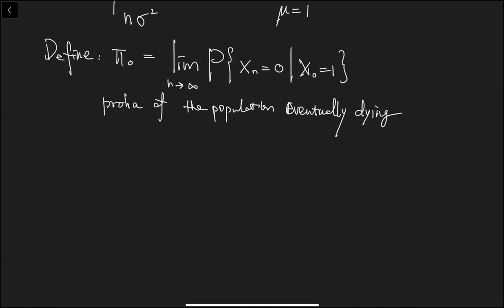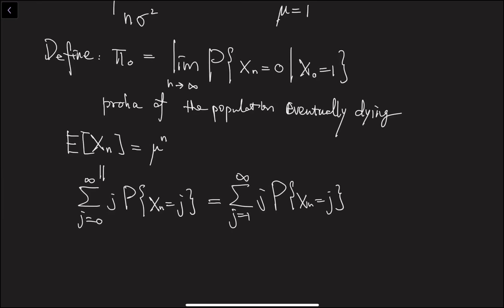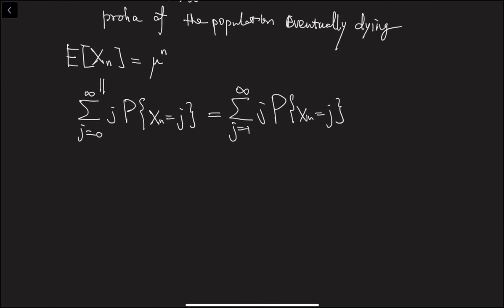Recall we derived that the expectation of the nth generation is μ to the nth power. This is nothing but the sum from j equals 0 to infinity of j times the probability that the nth generation has j individuals — the definition of expectation. Since j equals 0 contributes nothing, the sum starts from j equals 1.